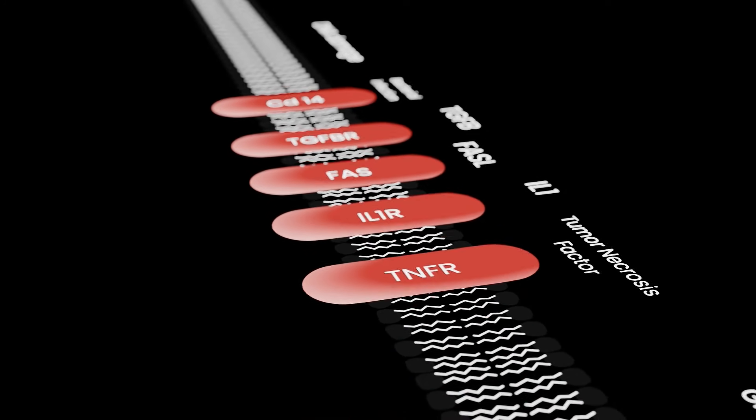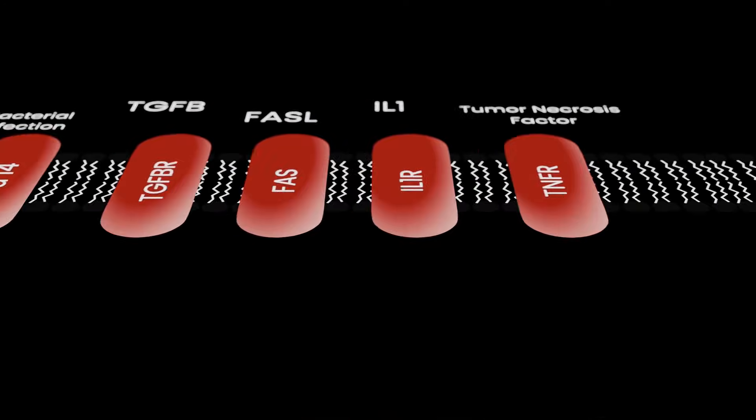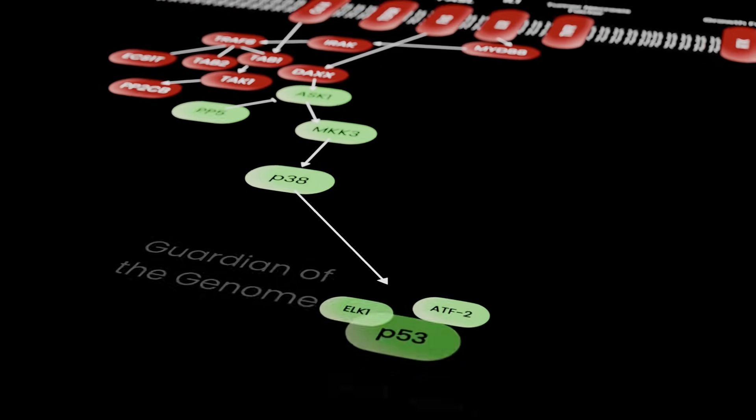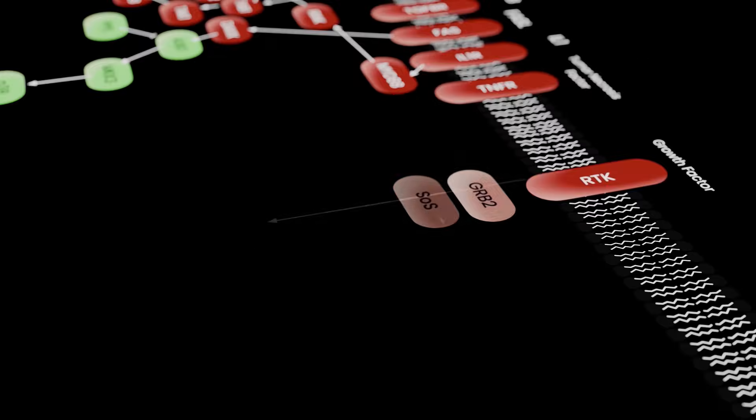They also do this for cell division, for memory formation in neurons, for immune cells launching an attack, and in short, almost every decision the cell ever makes. But the system is fragile. Even if one kinase goes out of line, disaster usually follows. Case in point: cancer.